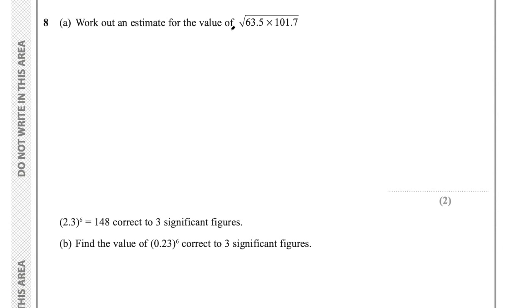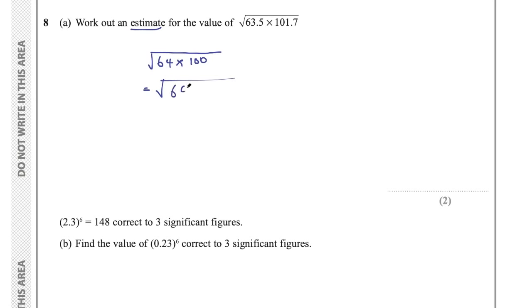Question 8 part A says work out an estimate for the square root of 63.5 multiplied by 101.7. For estimates we round these numbers — round 63.5 to 64 and 101.7 to 100 because both are close to square numbers. So 64 times 100 is 6400. The square root of 64 is 8, therefore the square root of 6400 is 80. So the estimate is approximately 80.